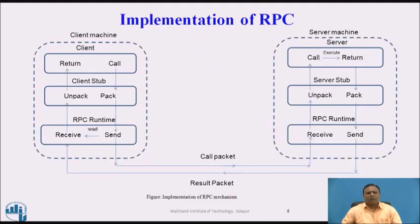This is the figure of the implementation of the RPC mechanism. The client calls the procedure along with its name and parameters, and sends it to the client stub. The client stub packs the name of the function and parameters into a particular format using packing, and sends it to the RPC runtime client. The RPC runtime client sends this call packet to the RPC runtime server, which then passes it to the server stub.